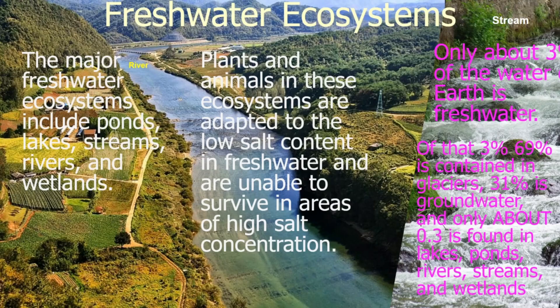Animals and plants in this ecosystem are used to not having salt in the water. For example, if I take a fish from a freshwater ecosystem and put it into a saltwater ecosystem, the fish will most likely die. A trivial fact you should know is that only about 3% of the water on Earth is freshwater, and of that 3%, 69% is in glaciers, 31% is in groundwater, and only about 0.3% is found in lakes, ponds, rivers, streams, and wetlands.